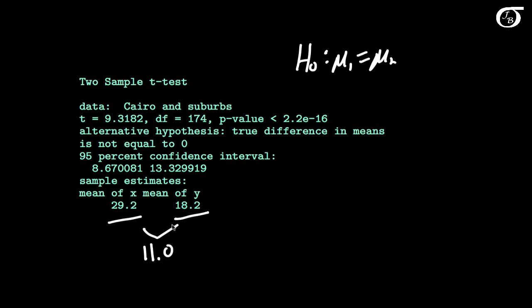In the output here we carry out the two sample t-test, get this t-value with 174 degrees of freedom and a tiny p-value, indicating very strong evidence against this null hypothesis. The output also gives us a 95% confidence interval for the difference in population means.